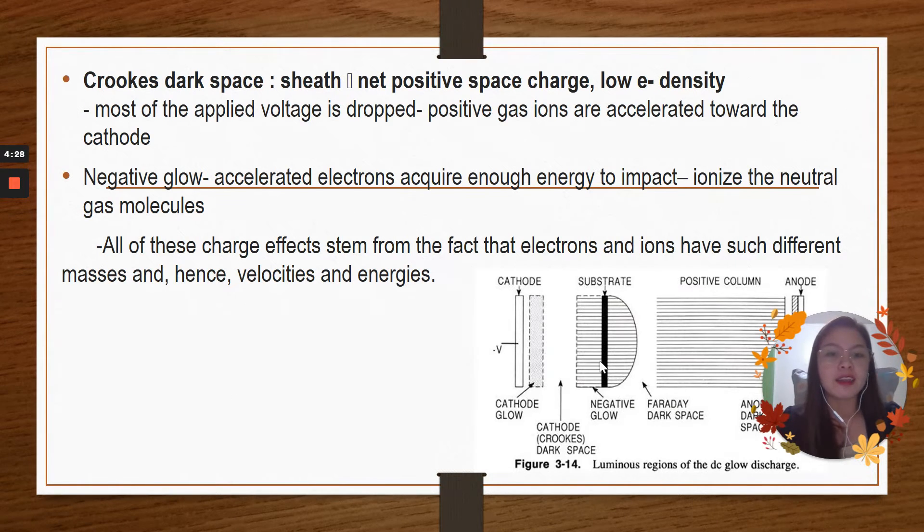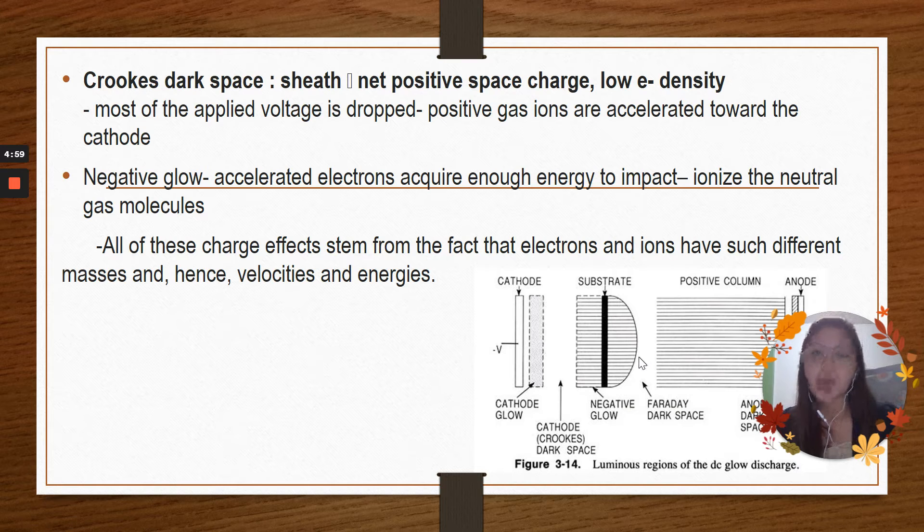And for the negative glow, this one is where the accelerated electrons acquire enough energy to impact ionize the neutral gas molecules. And this black one here, we call this one a substrate or the underlying substance or layer. This one also is the part where the Faraday dark space belongs.